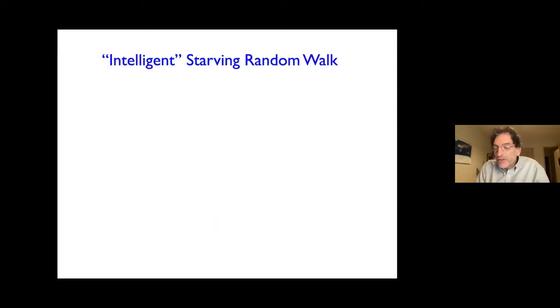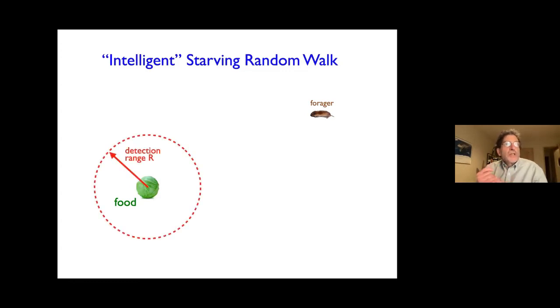So to try and answer this question, we formulated what we call the intelligent starving random walk—intelligent in quotes, because what I mean by intelligence is actually very limited. So here is basically what the model is all about. Here is a morsel of food, this is a cabbage. And you imagine that there is some kind of a forager who's looking for food like this. So here is our forager, this is a rodent called a vole. And the forager is characterized by something that we call the detection radius. So if the forager is within the detection radius of the food, he will go straight to it. But if he's outside of this detection radius, he just wanders around randomly until he comes within the detection radius of a piece of food and then goes directly to it.